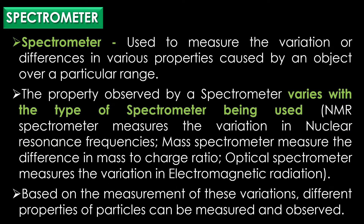The spectrometer is a scientific instrument used to measure the variation or differences in various properties caused by an object over a particular range. The property observed by a spectrometer varies with the type of spectrometer being used.